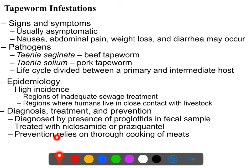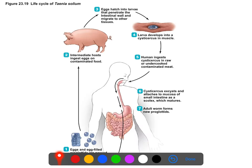Prevention largely relies on thorough cooking of meats, particularly pork. There are also tapeworms that spread through uncooked fish, so it's very important that if you are making sushi, you get sushi-quality fish, because low-quality fish can lead to tapeworm. This slide shows the life cycle of the tapeworm.